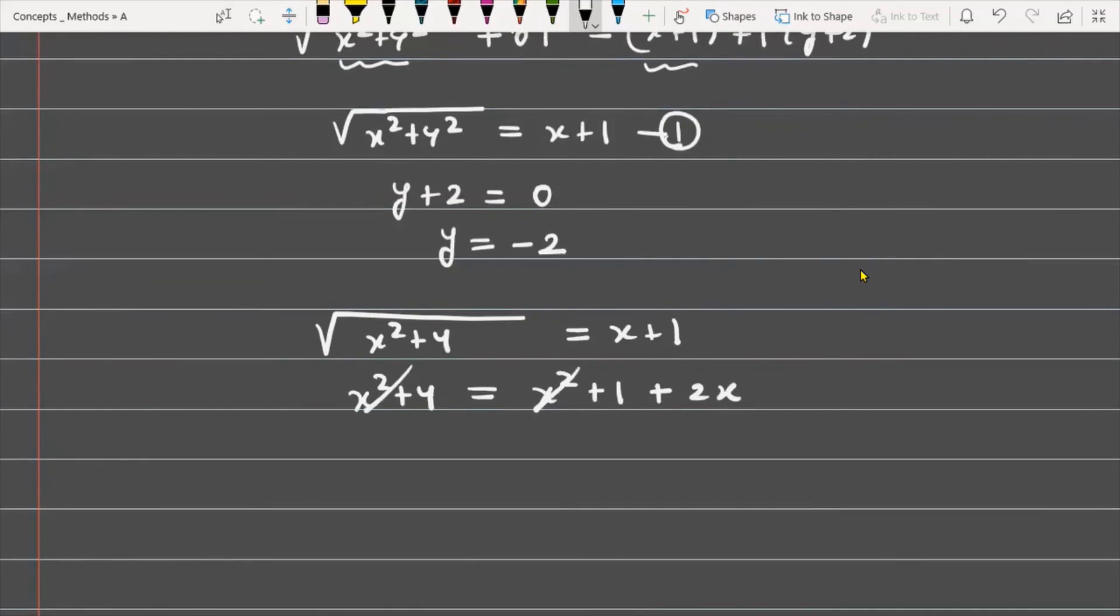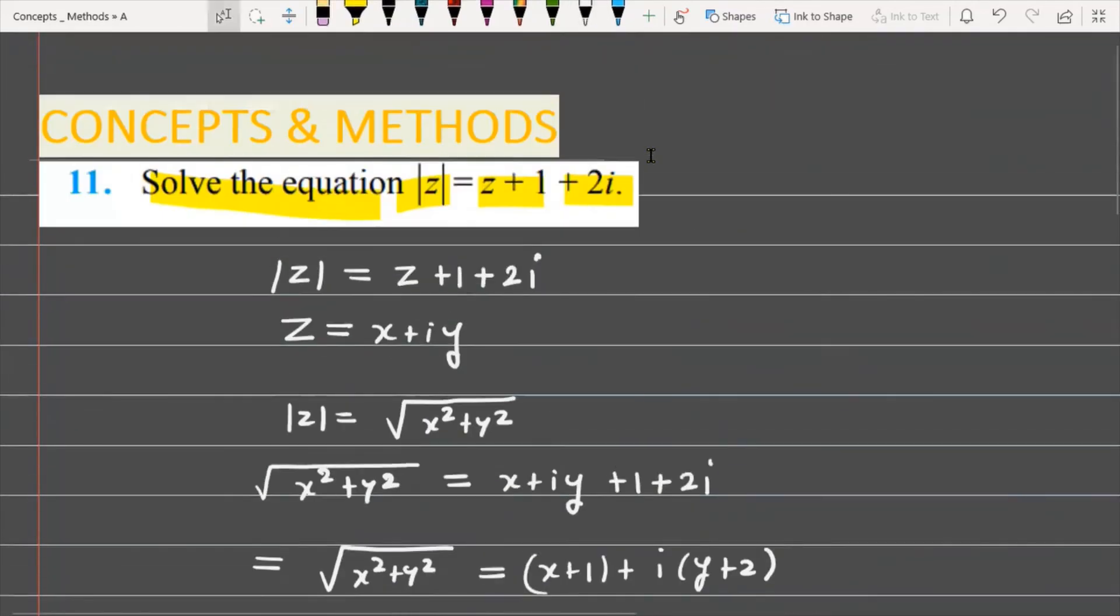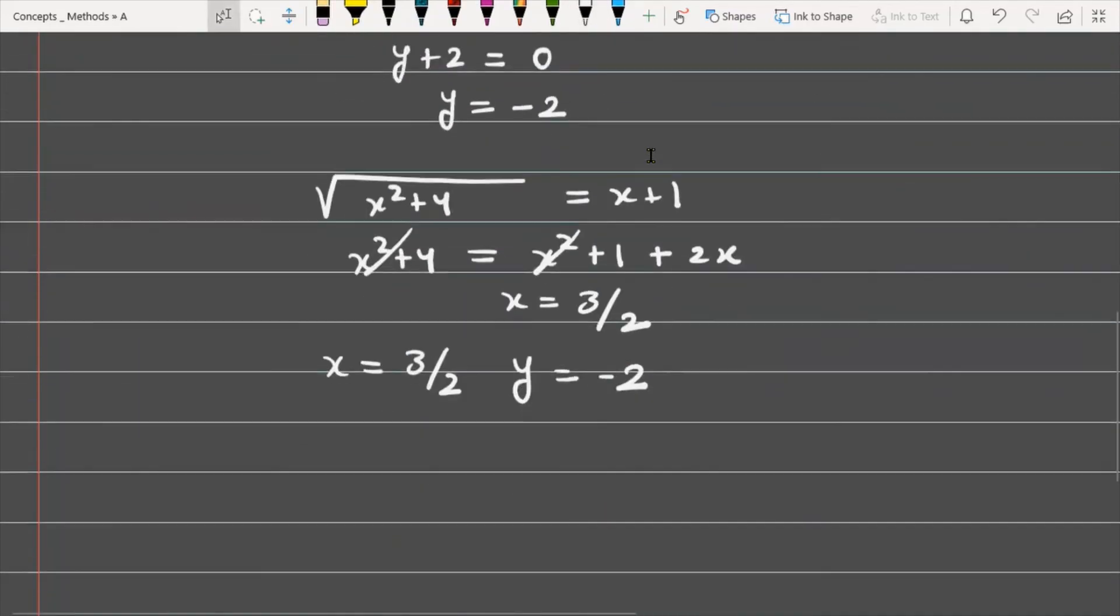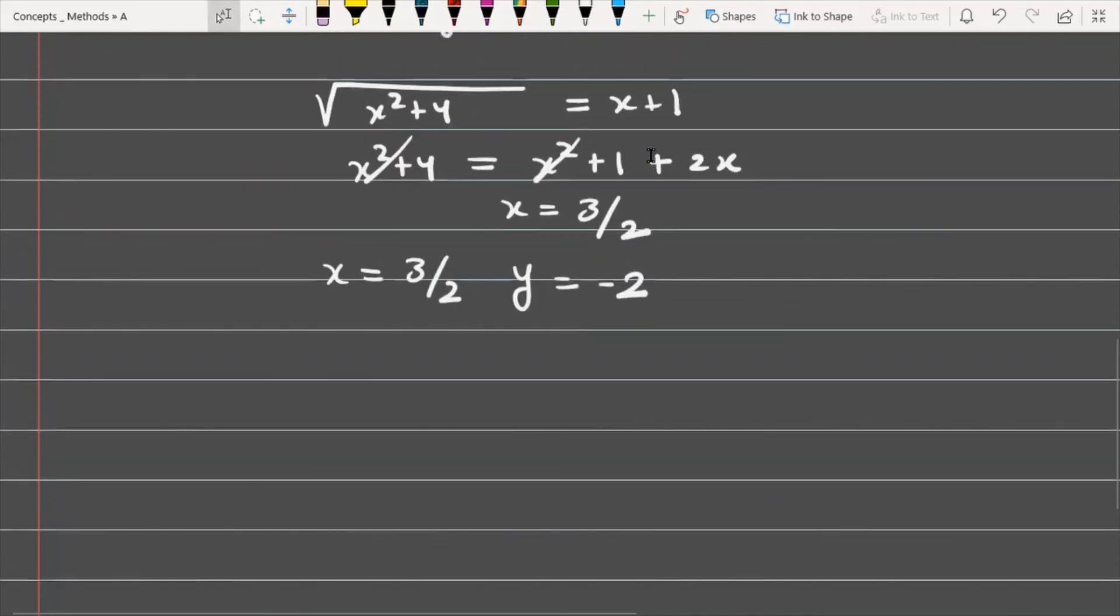When you square, it becomes x² + 4 = x² + 1 + 2x. This cancels and x is 3/2. Finally, x = 3/2 and y = -2 is the solution for the given equation. The answer in complex number format is 3/2 - 2i, which is the complex number that satisfies the given condition.